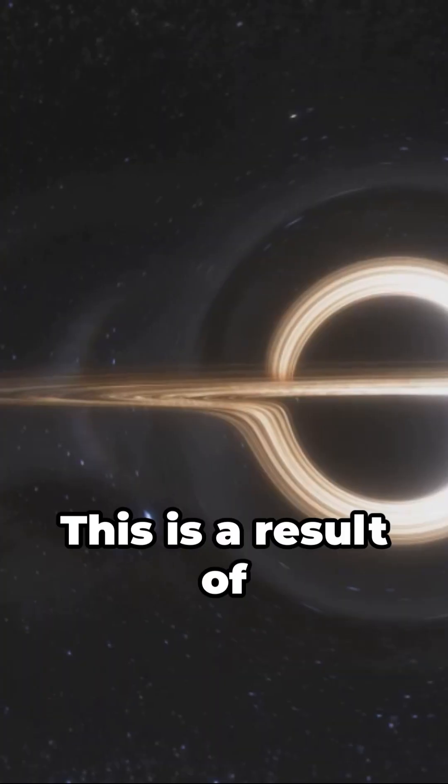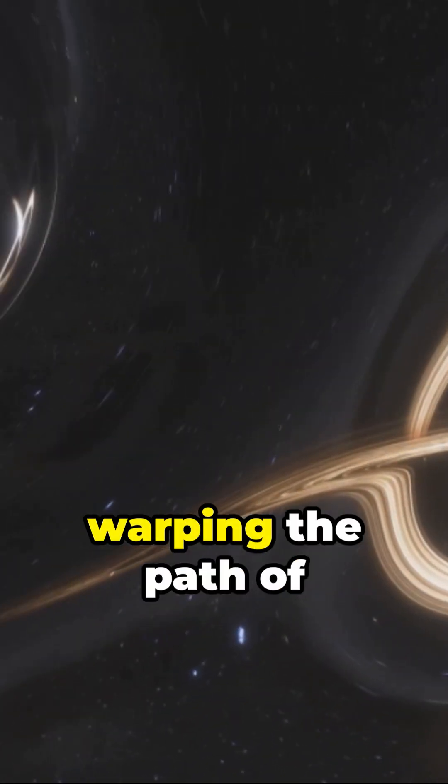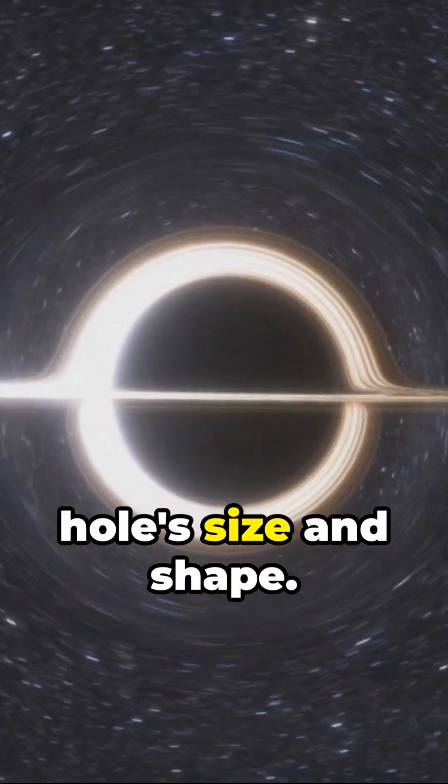Recent studies have observed light being bent and distorted around black holes. This is a result of the black hole's intense gravity warping the path of light, providing critical information about the black hole's size and shape.